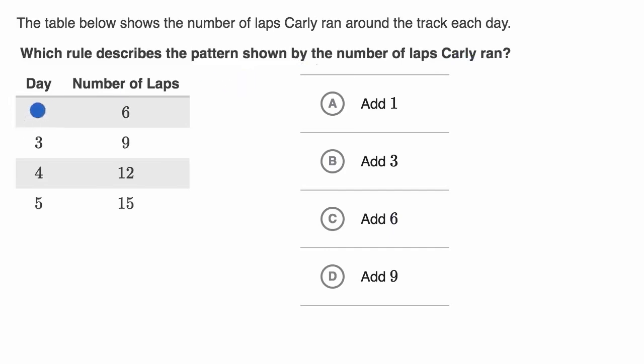All right, it seems like every time a day goes by, the number of laps are going up by three. So if you want to figure out the next day, let's say day six, you would add three from day five. So the pattern here is to add three.